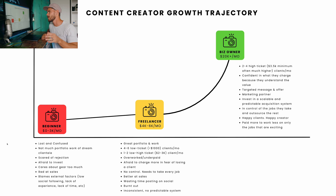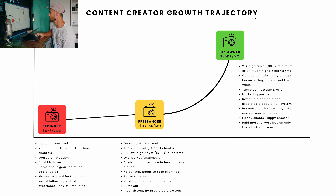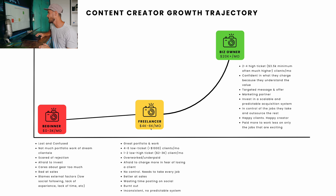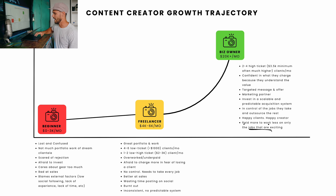Hey, what's up, it's Nash. Welcome to today's training where we're talking about the content creator growth trajectory and how you can go from being a freelance photographer making anywhere from 4 to 6k a month and scale your business to 20k a month plus, while getting paid more to work less and only working on jobs that are actually exciting for you.